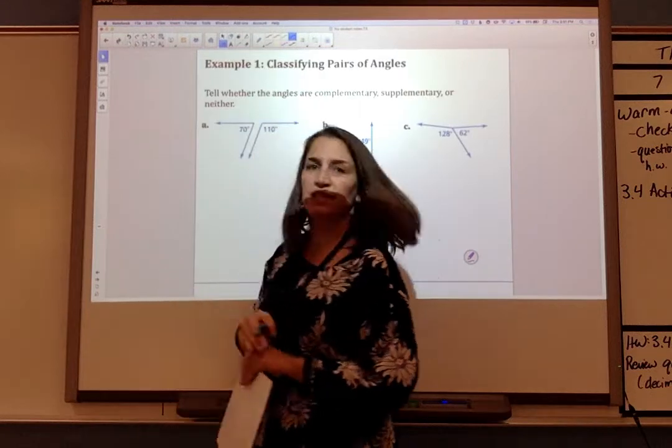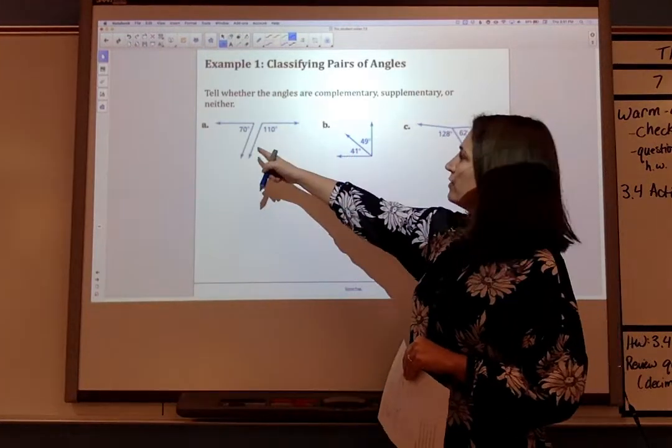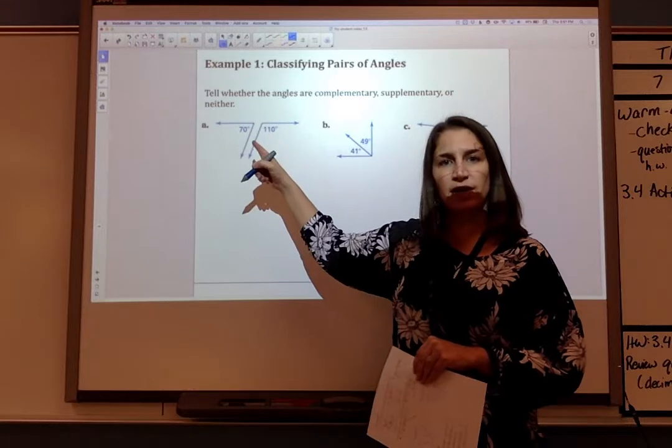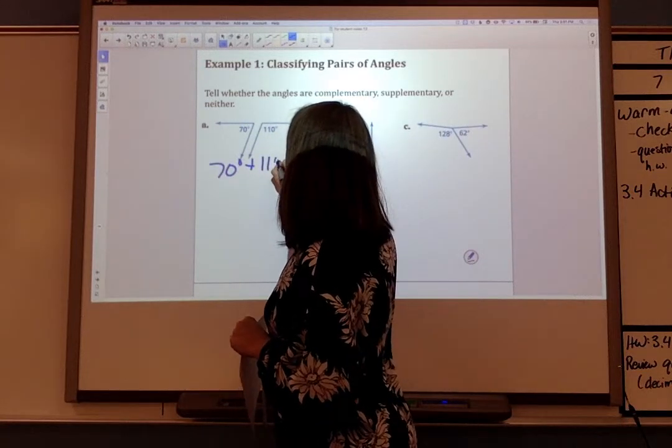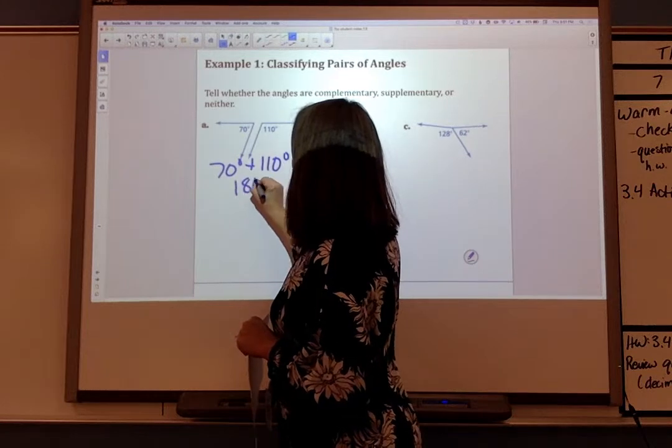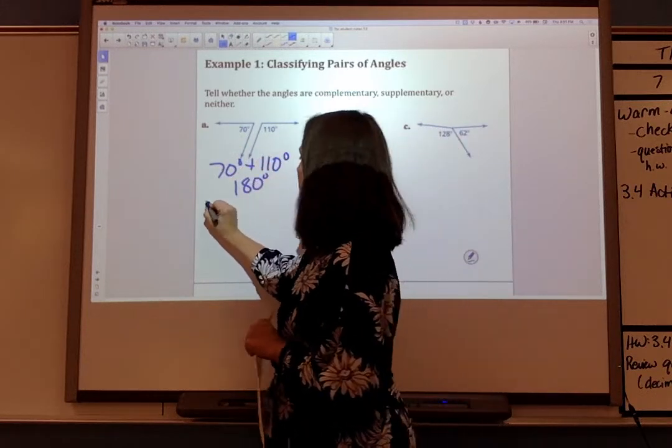Let's go ahead and classify some angles. My first set of angles I have a 70 degree and a 110 degree angle. So 70 plus 110 degrees is 180 degrees. That means these two angles are supplementary.